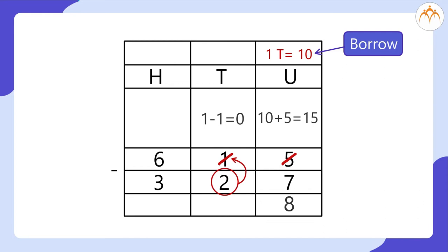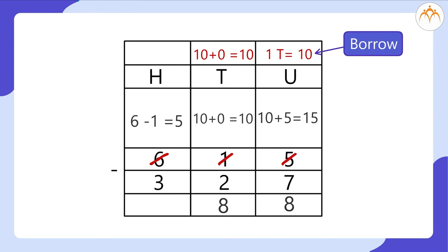We cannot subtract 2 from 0, so borrow 1 from the hundreds place. We have 10 minus 2 equals 8. We have borrowed 1 from the hundreds place, so 6 minus 1 equals 5, and 5 minus 3 equals 2.